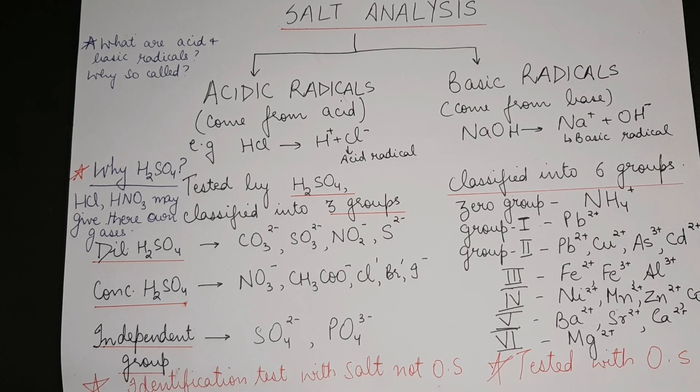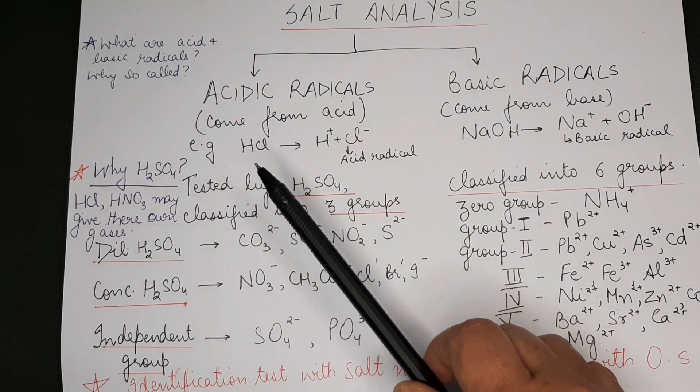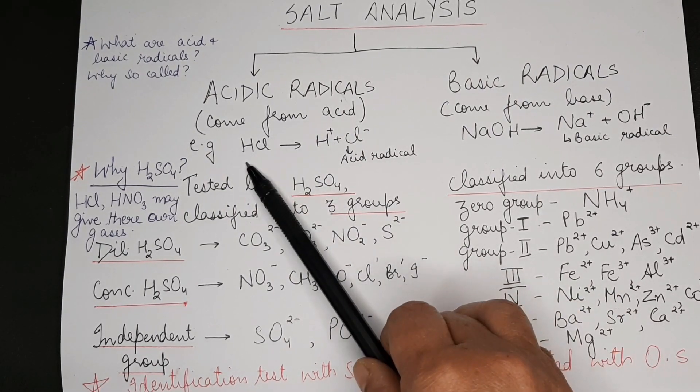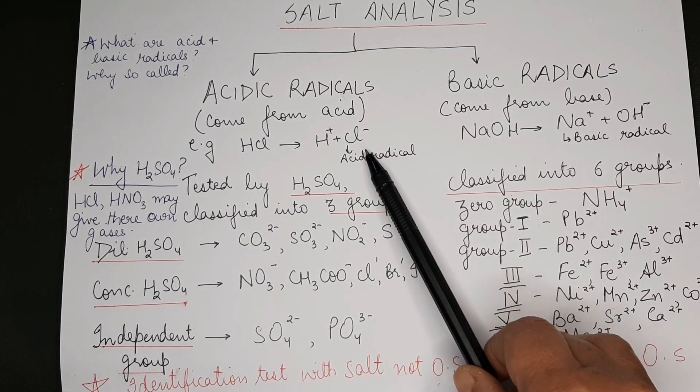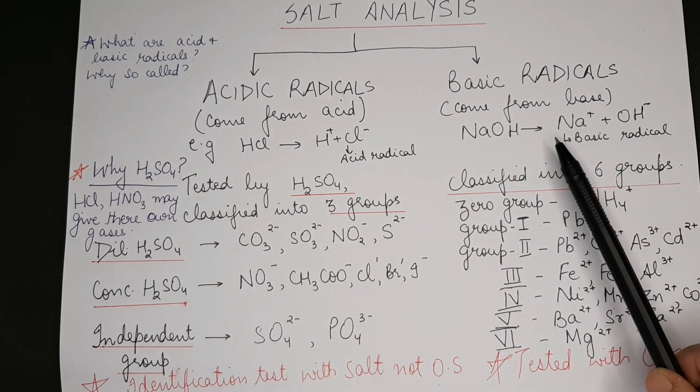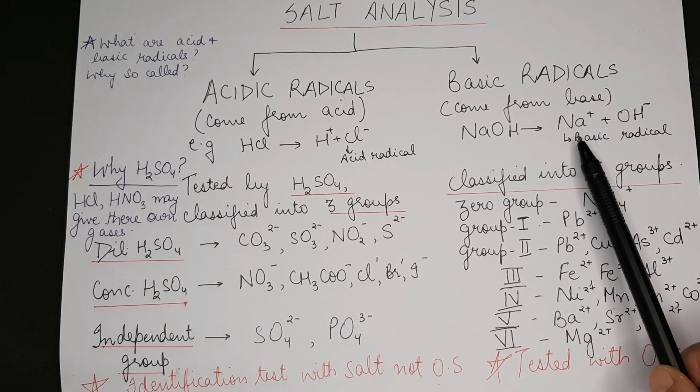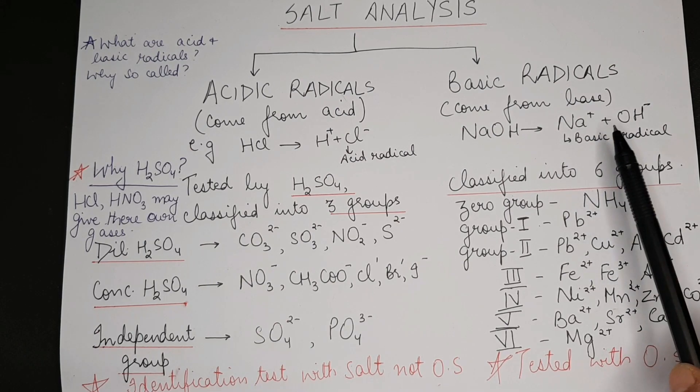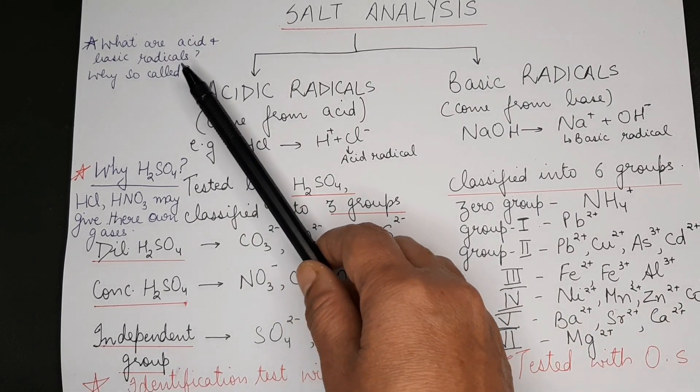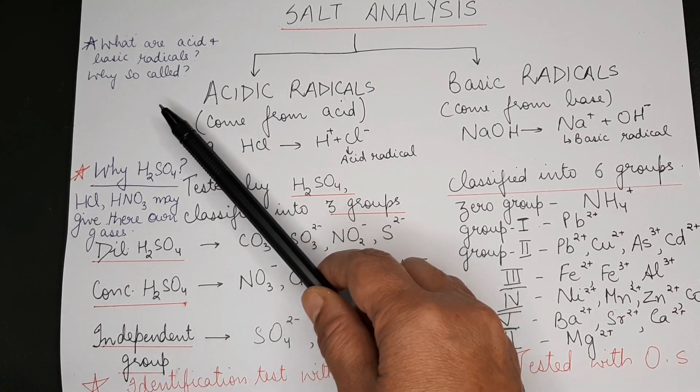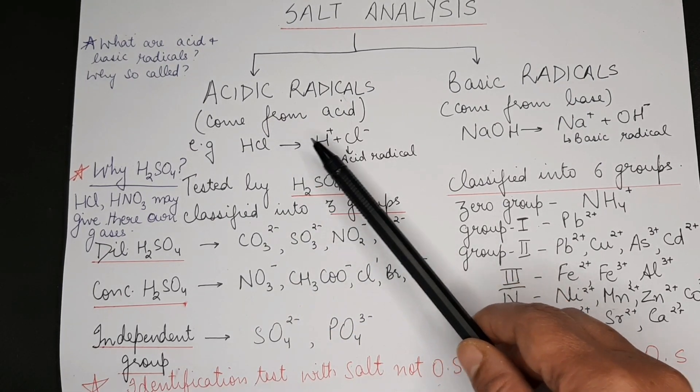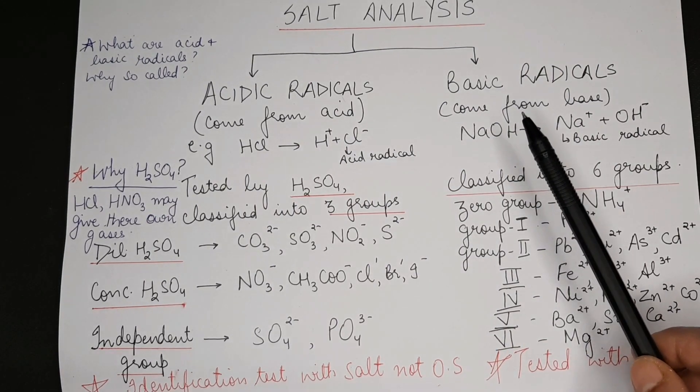Let us start with salt analysis. Acid radicals come from the acid part. For example, HCl gives H+ and Cl-, so Cl- is an acid radical. Basic radicals come from the base, so example sodium ion is a basic radical, it's a cation because it's coming from a base. The first viva question is: what are acid and basic radicals and why are they so called? Acid radicals are the anions, so called because they are obtained from acid. Basic radicals are so called because they are obtained from bases.